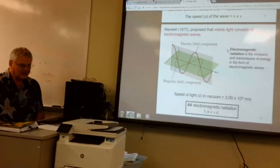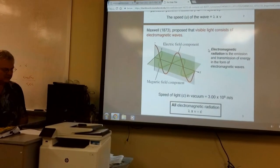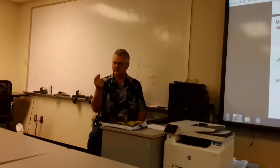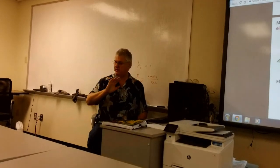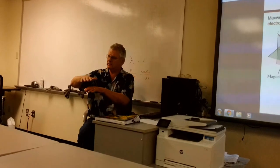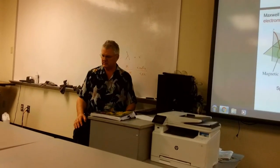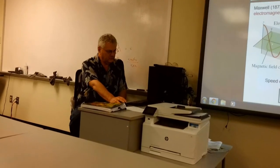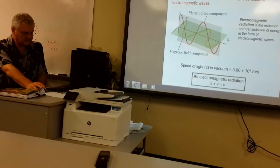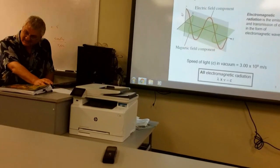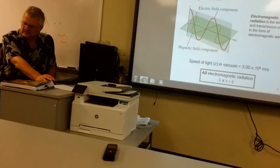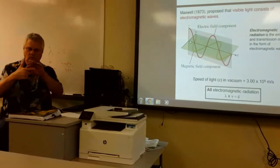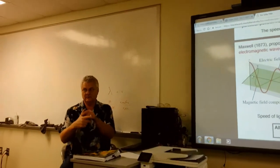Maxwell proposed that visible light consists of oscillating perpendicular electric and magnetic fields. If you have a point in space, the electric field strength oscillates in a wave phenomenon, and a change in electric field strength induces a perpendicular magnetic field. You can depict both using a sinusoidal representation — the electric field oscillates one way and the magnetic field perpendicular to it, by the right-hand rule.